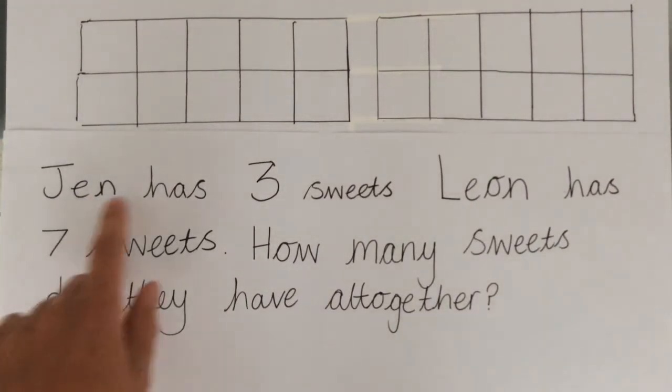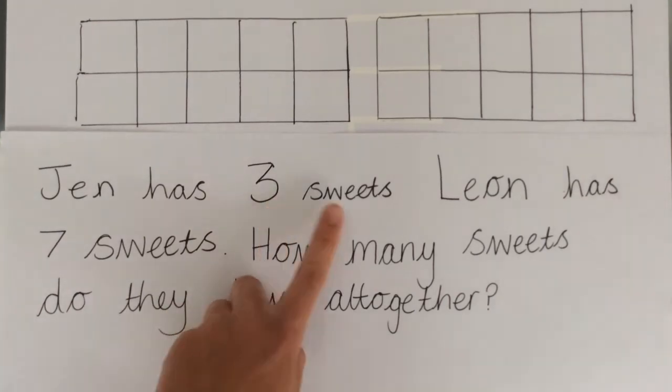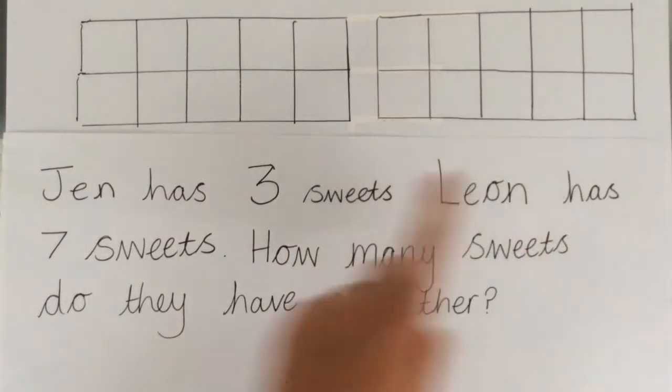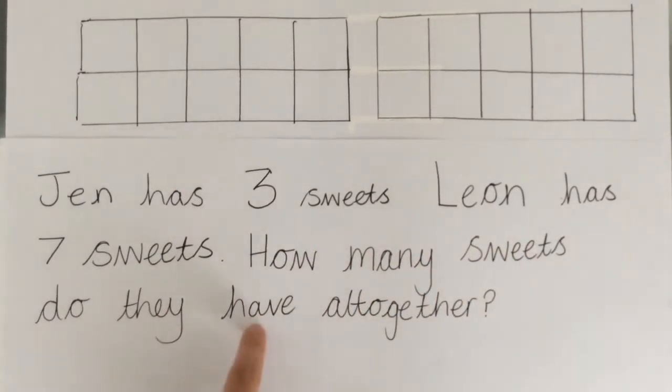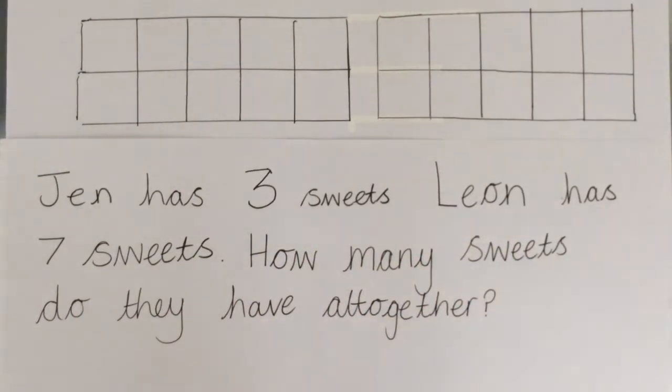Jen has three sweets. Leon has seven sweets. How many sweets do they have all together? So let's have a look. What special things can we see in this word problem?